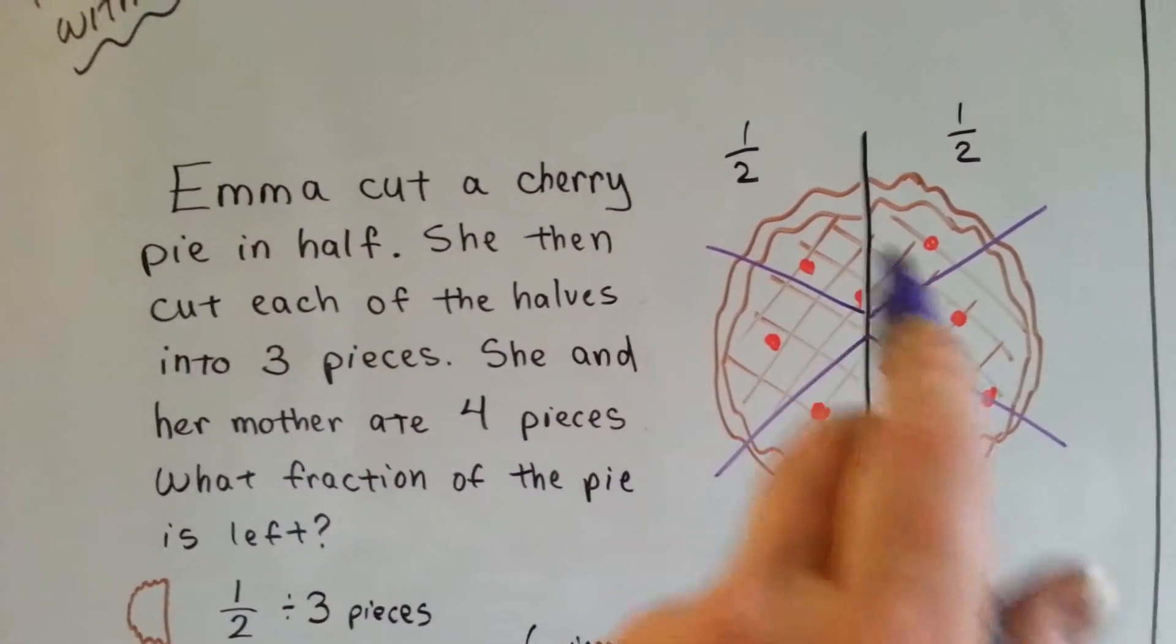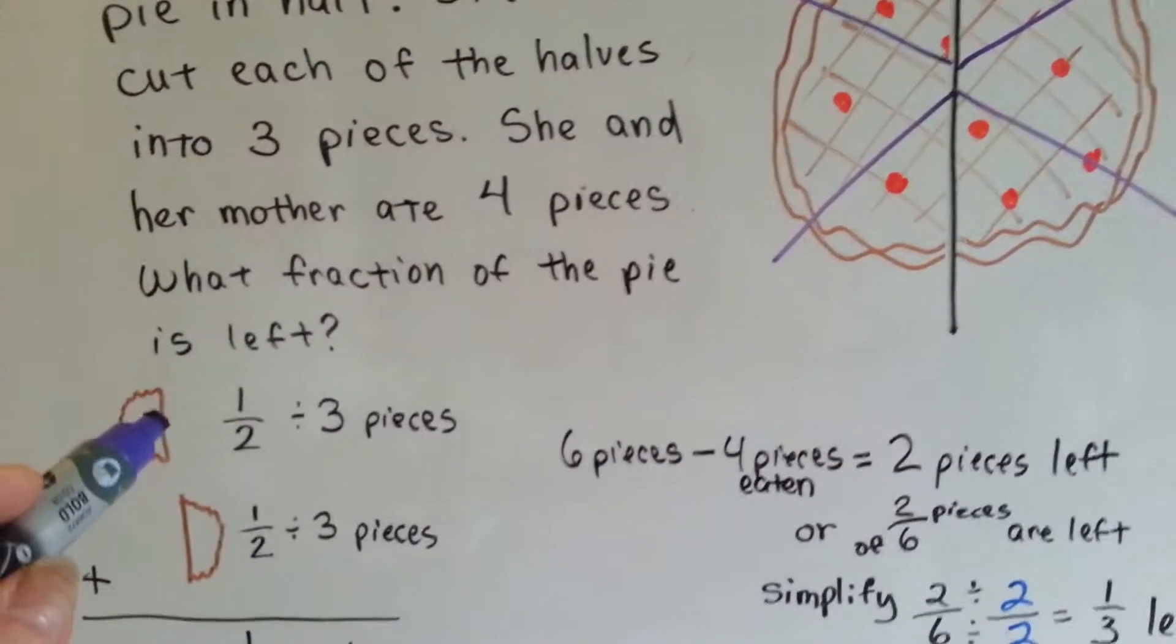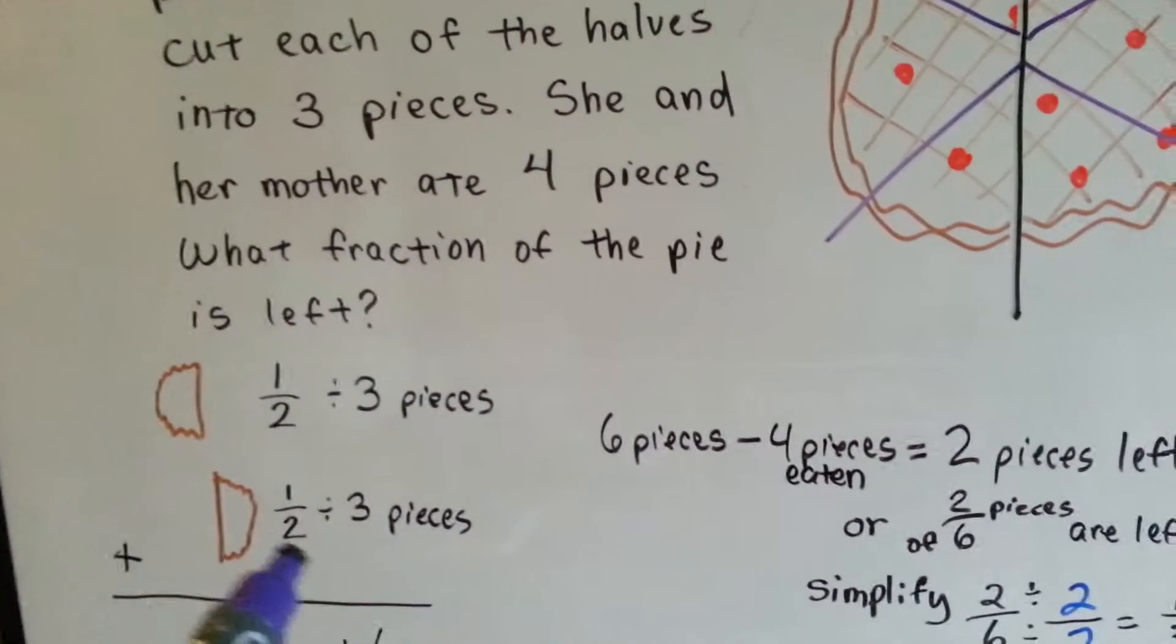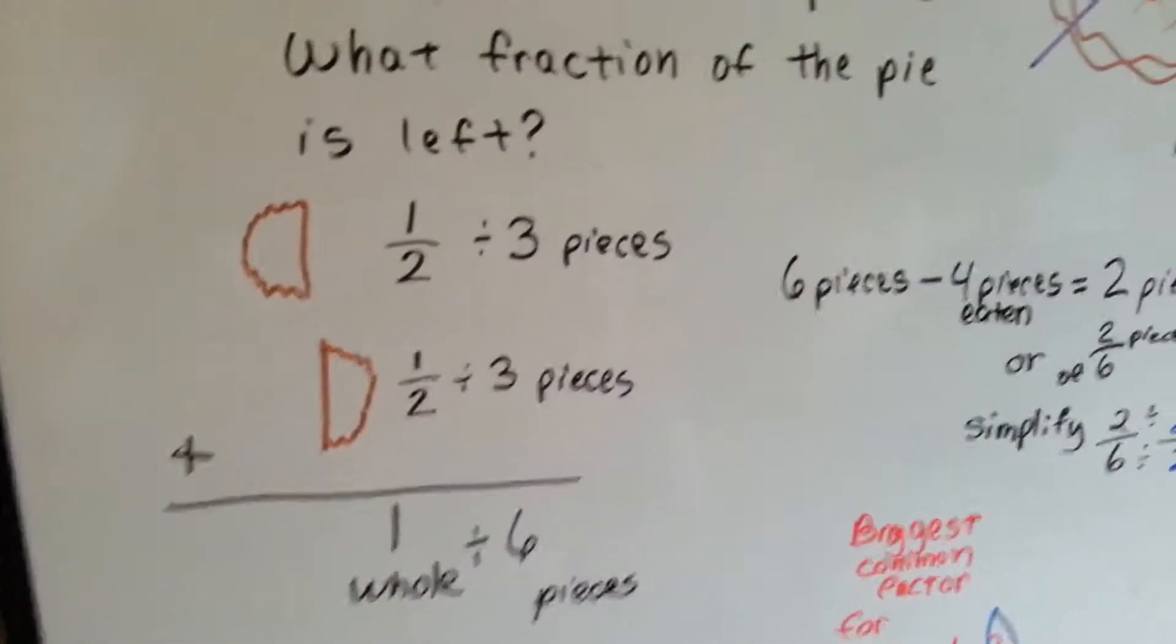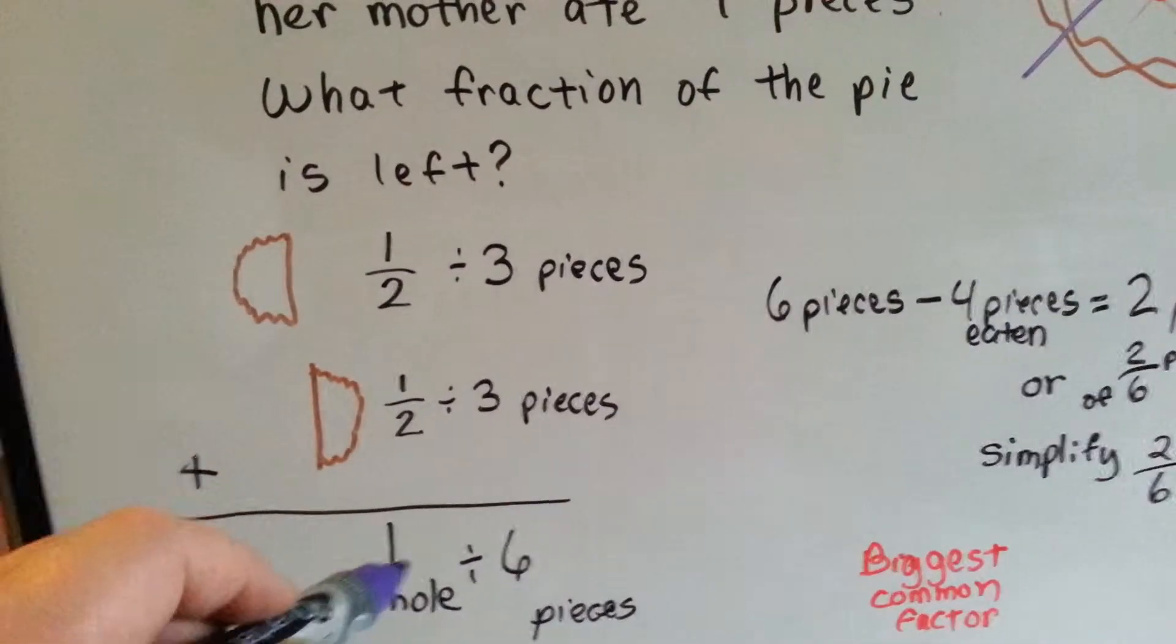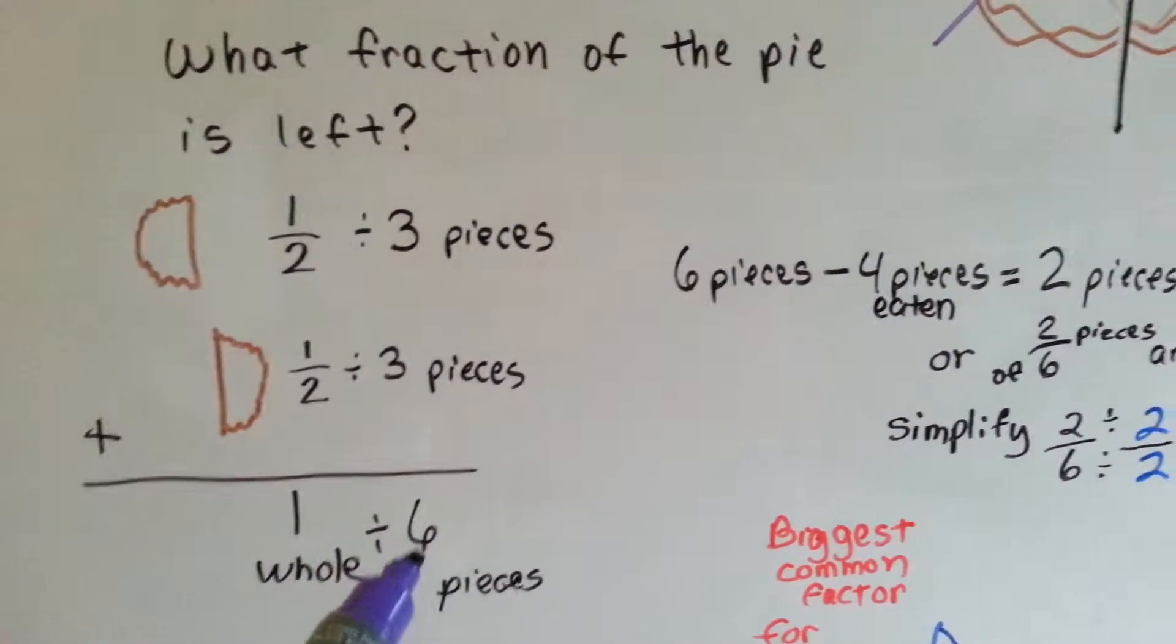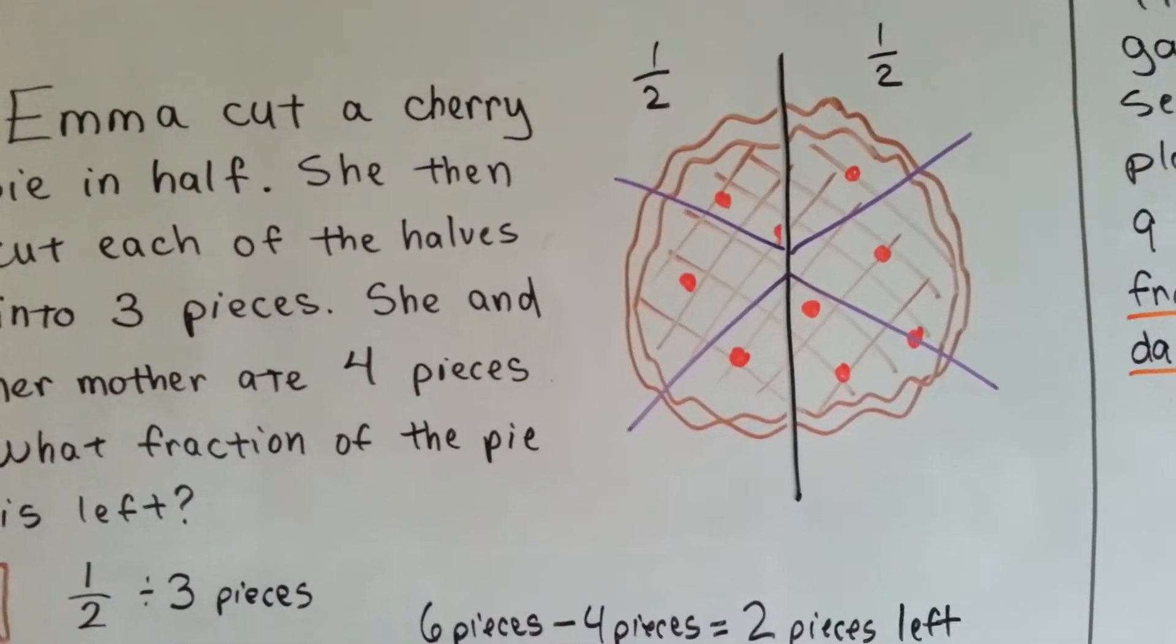What fraction of the pie is left? Drawing the picture can help you visualize what is going on. The pie was cut into two different pieces. This half was cut into three pieces, and this half was cut into three pieces. If you added this half and this half, you'd have a whole pie. If you added these three pieces to these three pieces, you'd have six pieces. Now we have one whole pie divided into six pieces.